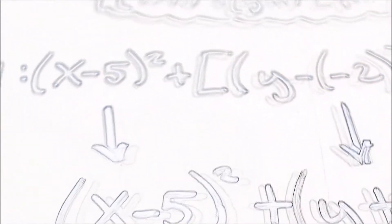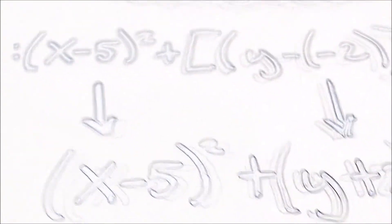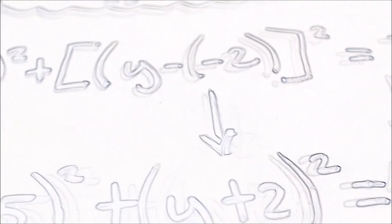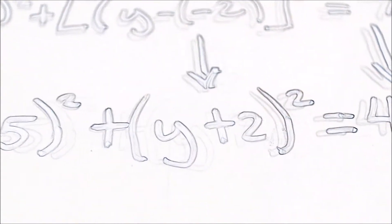The first step is to substitute the h, the k, and the r. The next step is to bring the equation down. So y minus negative 2, you combine them to get positive 2.